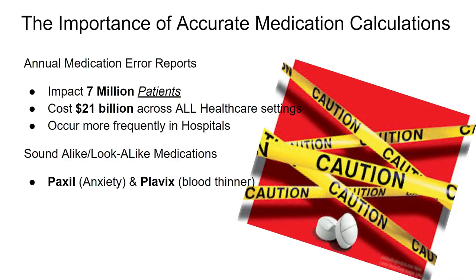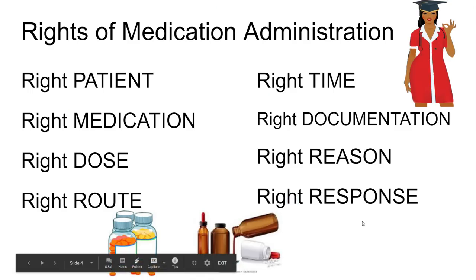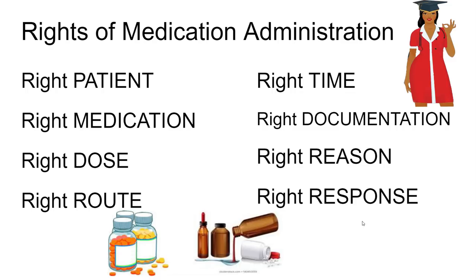You are going to take a medication calculation test at your university or college, and a lot of times they ask you to have 100% on that test. This is why — because we want to reduce medication errors, and we want to start teaching this concept while we're in school. The way that we help reduce medication errors is by adhering to the rights of medication administration.